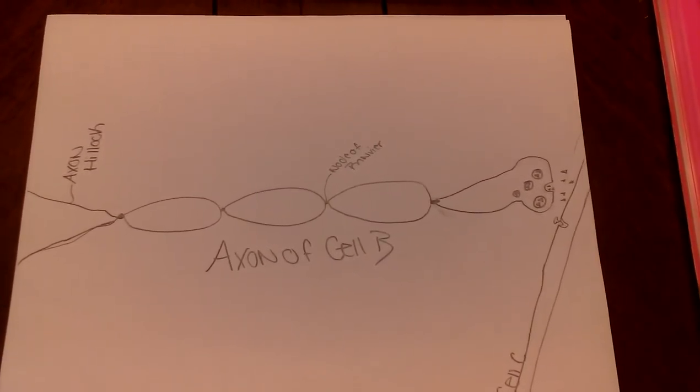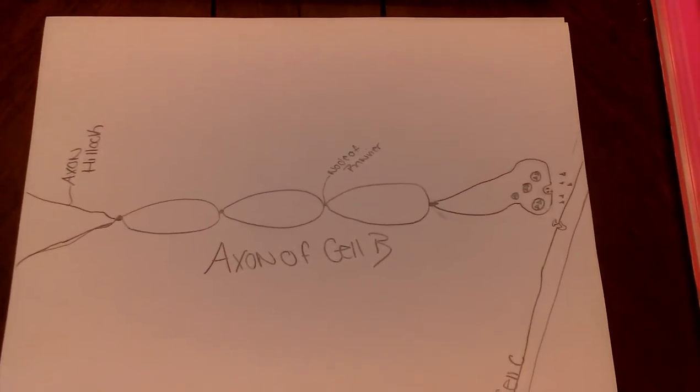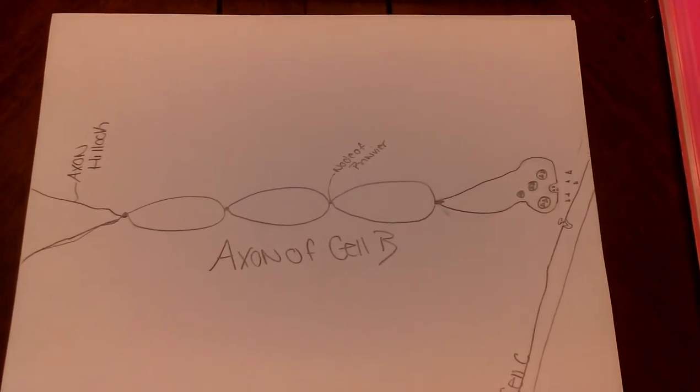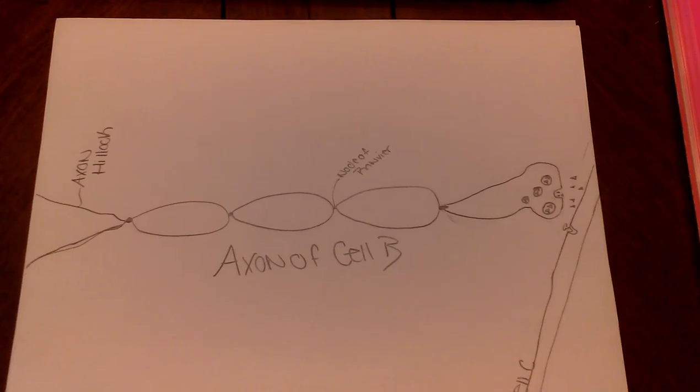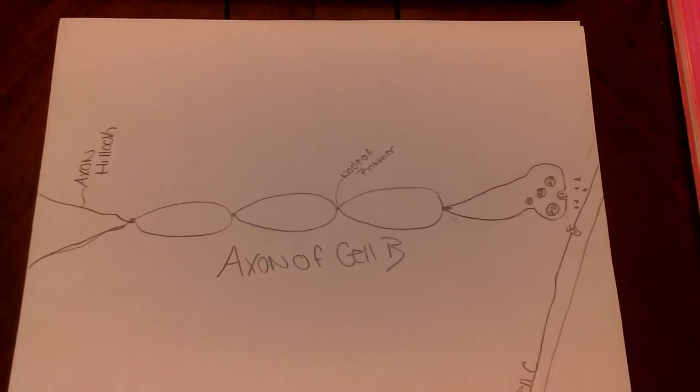The action potential travels the axon by saltatory conduction. Saltatory conduction is when the charges jump from node of Ranvier to node of Ranvier. The space is between the myelin sheath.